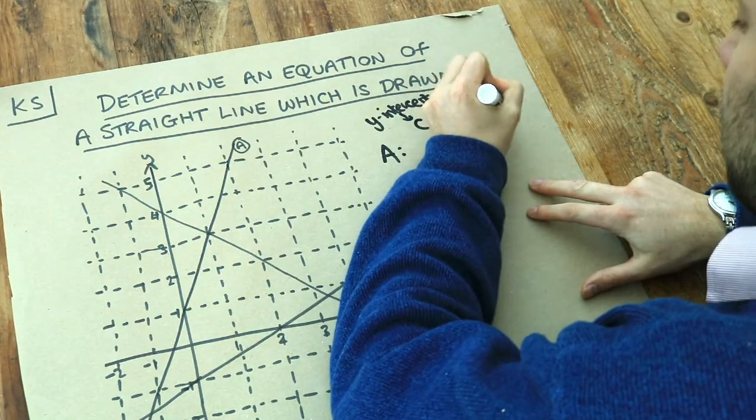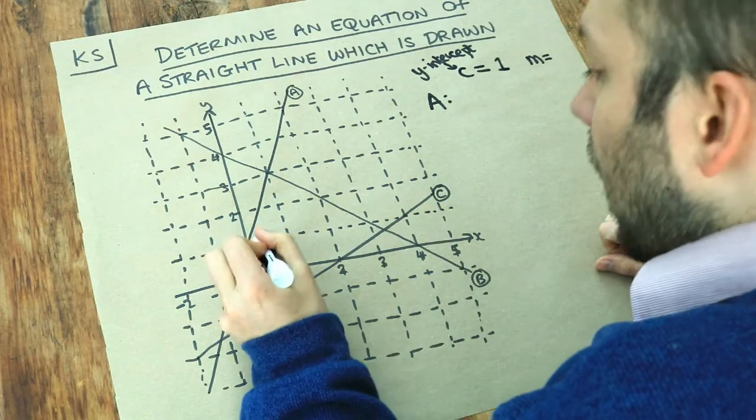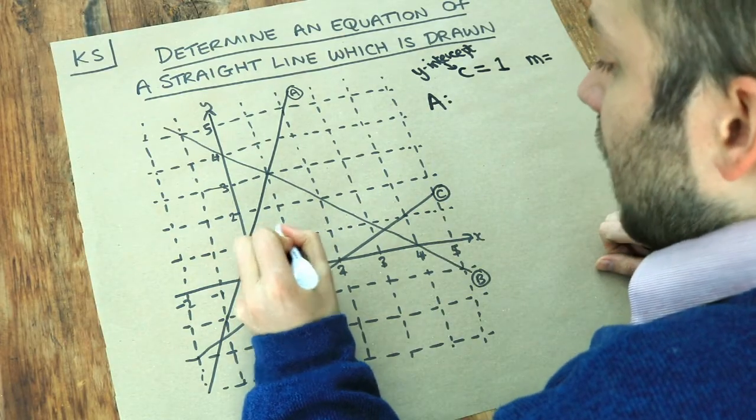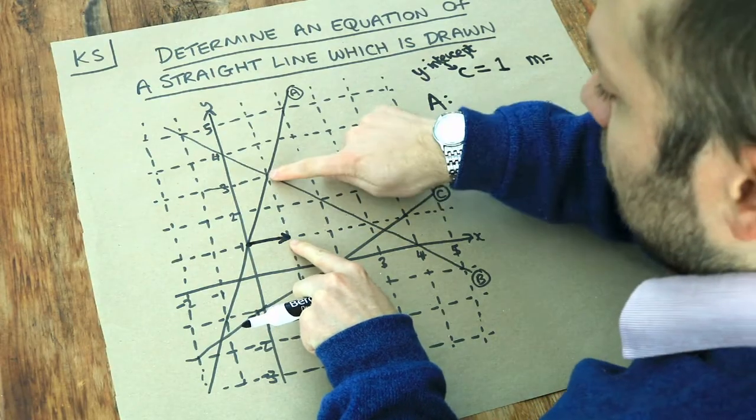And then remember we use the letter M to represent gradient. And what gradient is, is for each unit increase in x, so each time x increases by one, what does the y value change by?